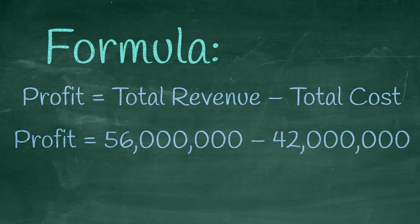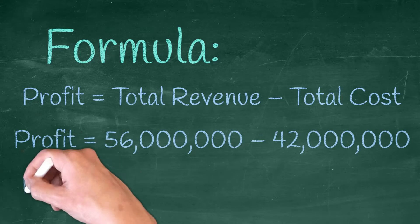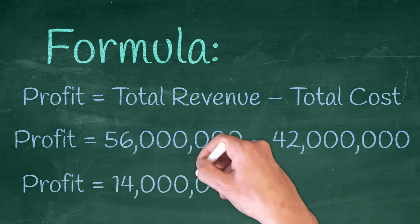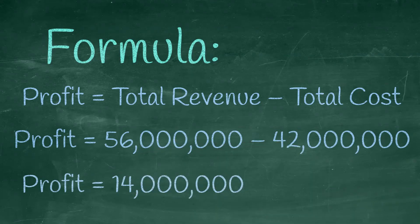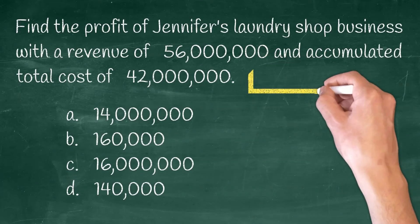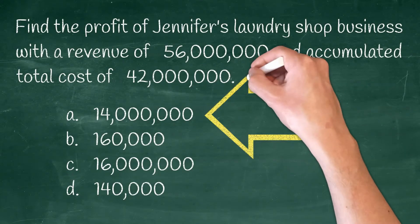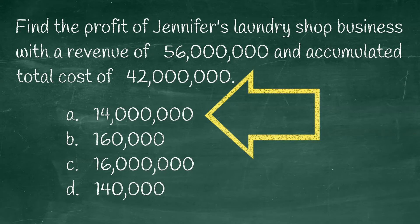For this question, all you have to do is use the formula by subtracting the cost of the business, which is 42 million pesos, from the revenue of the business, which is 56 million pesos. By doing that, we get the answer of 14 million pesos. So the answer to the question earlier is letter A.